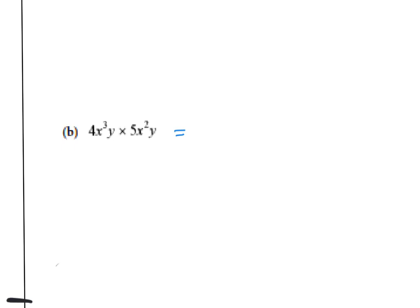For problem p: add the powers and multiply the coefficients. 4 times 5 is 20. x^3 times x^2 gives x^5. y^1 times y^1 gives y^2.